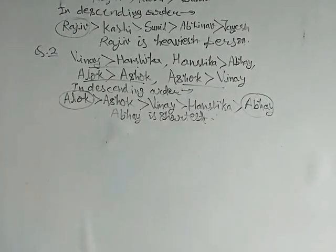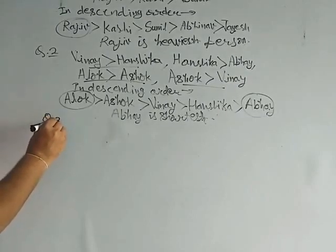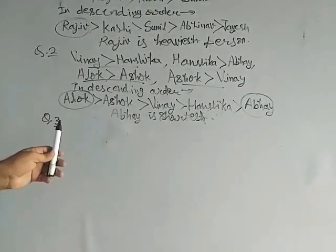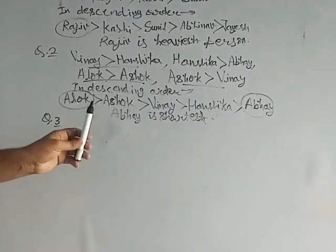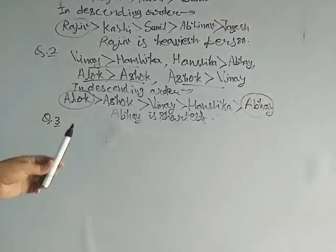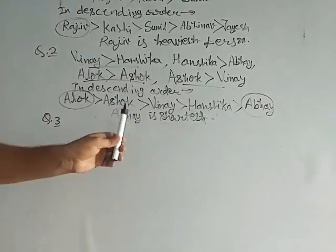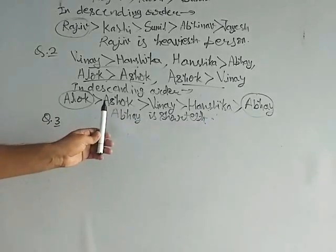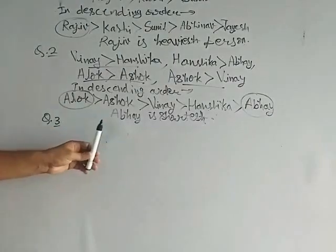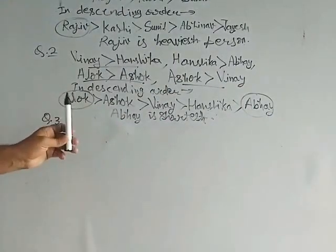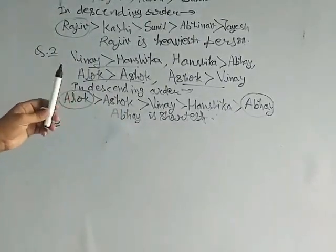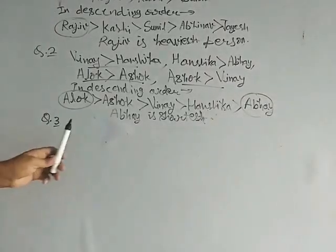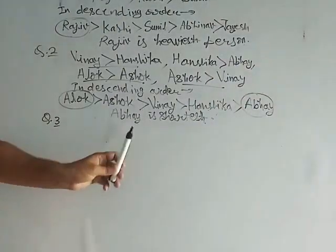Now the next question is question number three. In a group of five persons, Kamal is the tallest while Lata is the shortest. Rasmi is shorter than Kamal but taller than Vandana and Prem. Prem is the second shortest person in the group. Who is the third tallest?